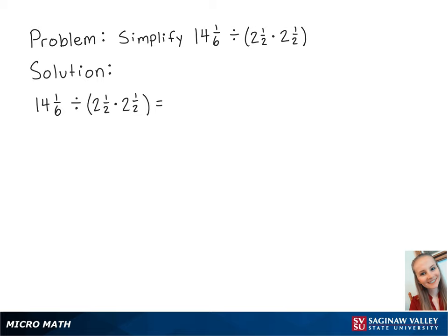First, we need to convert the mixed numbers into fractions. 14 and 1 sixth is equal to 85/6, and 2 and a half is equal to 5 halves.